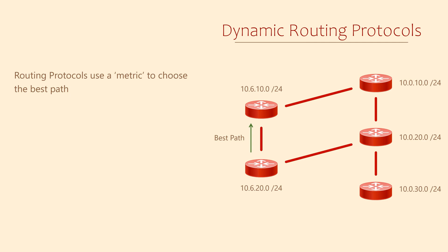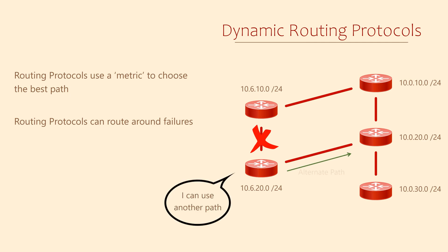This will give you an idea of how routing protocols handle changes in the topology. When a router or link in the network fails, the advertisements along that path stop. When a router notices this, it updates its list of neighbours and may need to update the routing table too — this may mean removing some routes. Or there may be alternate paths available, in which case the routing protocol adds the alternate route to the routing table. This enables the network to automatically work around failures.